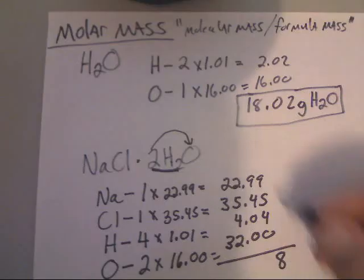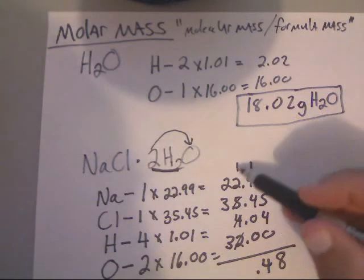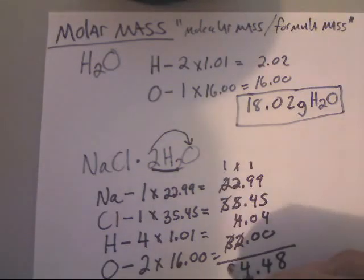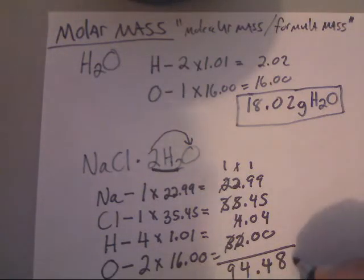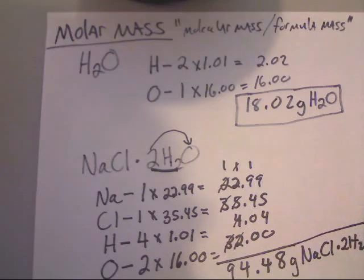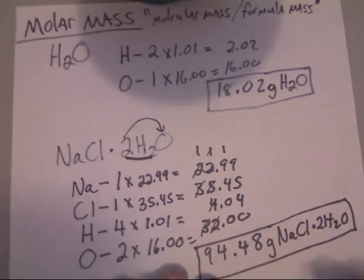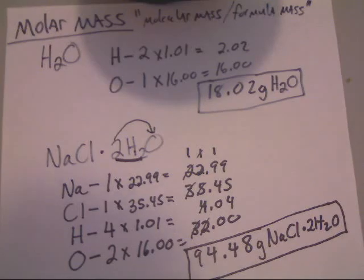After that, add these up. That should be 94.48 grams of NaCl·2H₂O. All that I did was exactly what I did on the first example. Just please make sure you don't forget the units — grams — and what you were calculating it for. And that's it. Hope this helps on molar mass. Thank you.